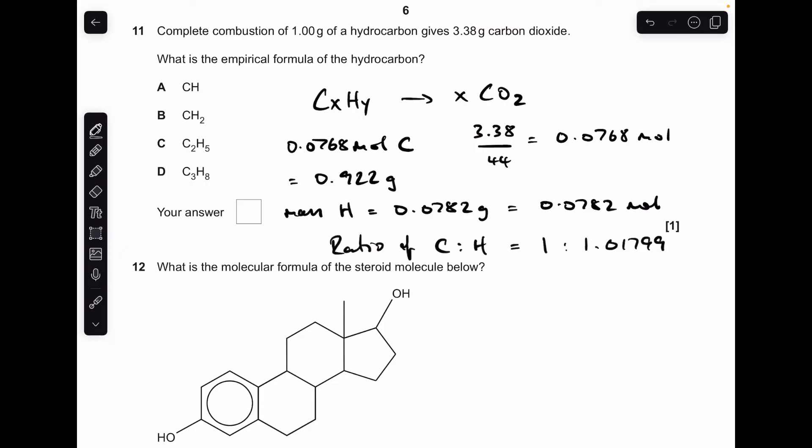Then to get the ratio of carbon to hydrogen, we divide by the smallest number. We're dividing both by 0.0768, which gets 1 to 1.01799, which is effectively 1 to 1. So the answer was A.